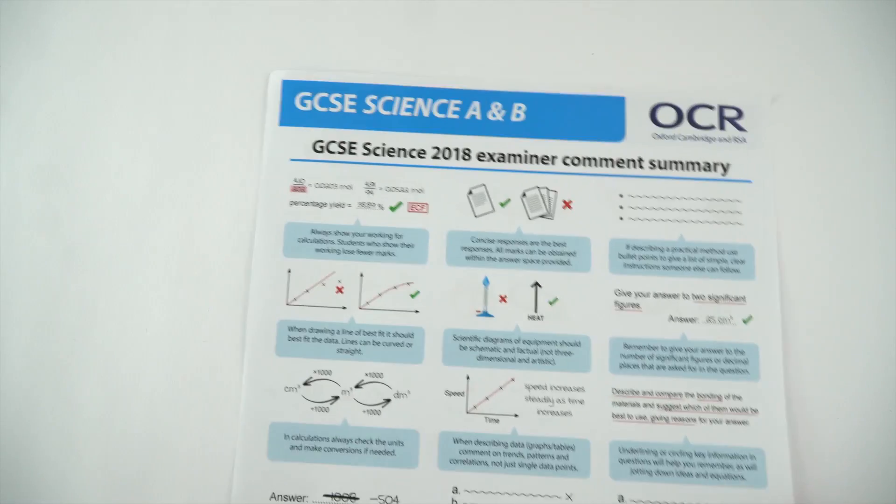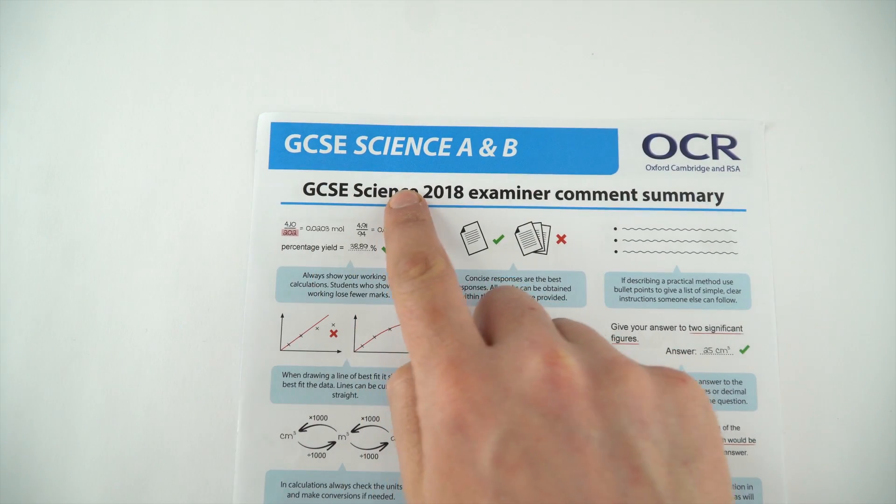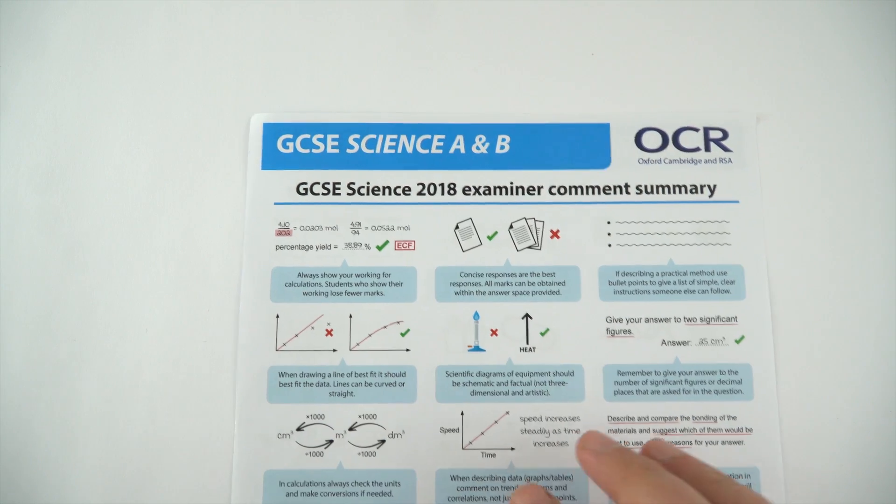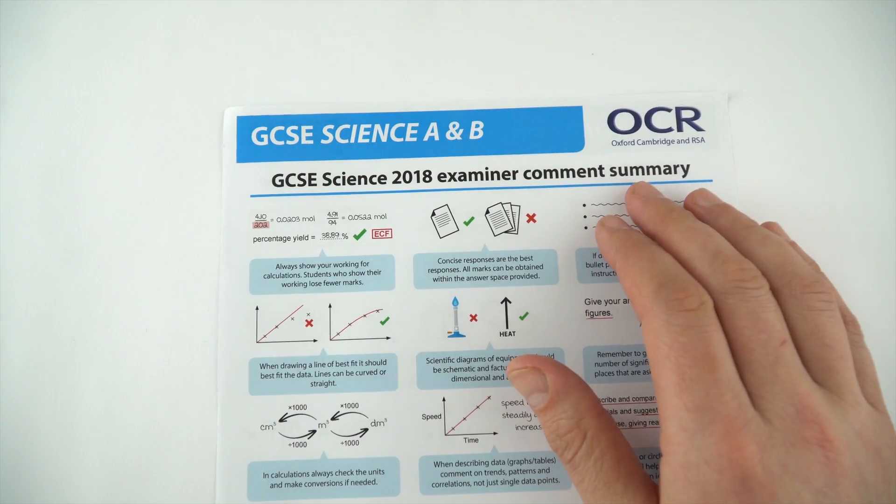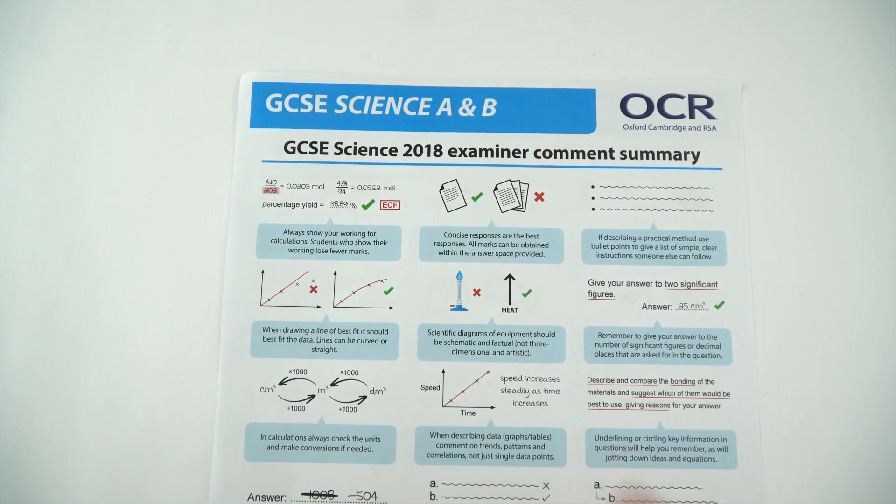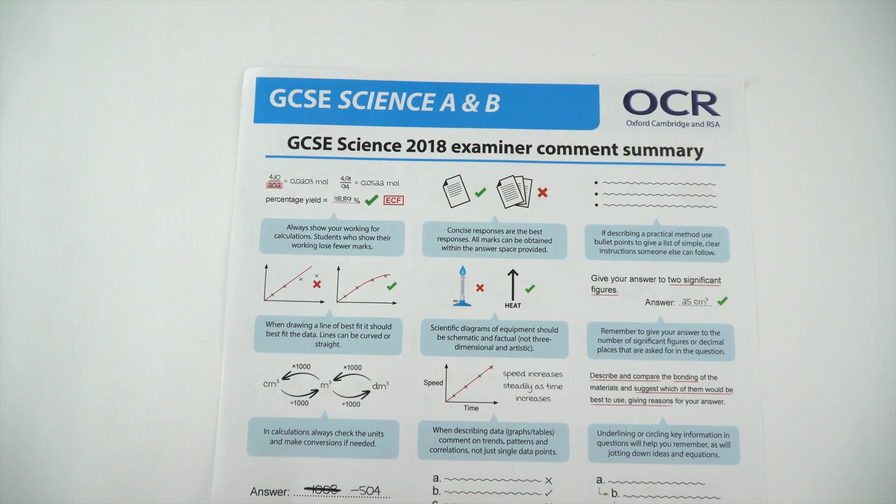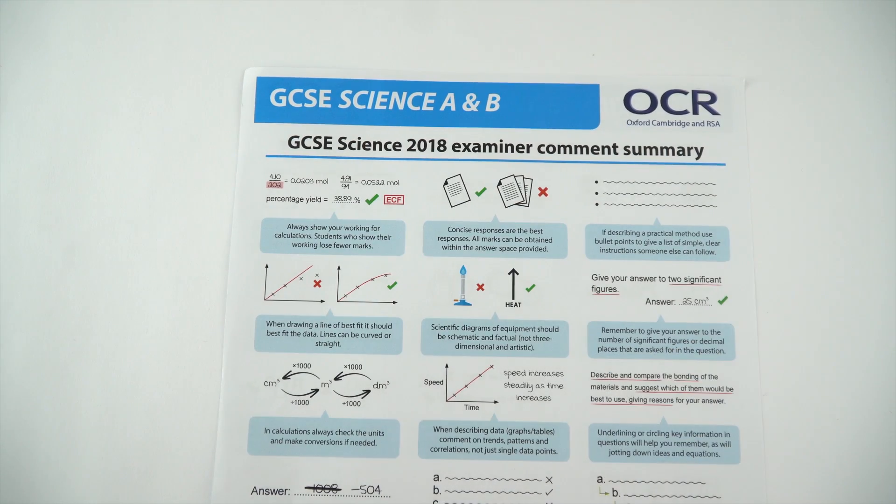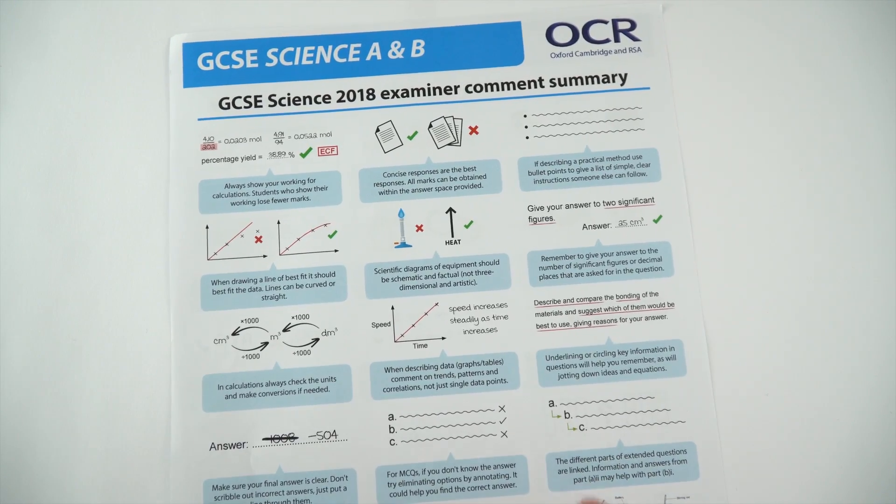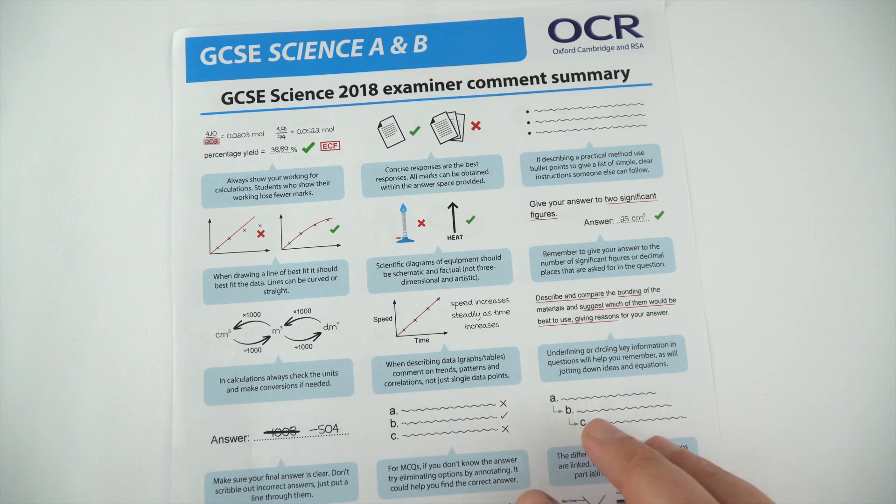This one here is for GCSE Science, both A and B for OCR, but I can guarantee that a lot of the mistakes that they see for OCR are going to be the same for Edexcel, AQA, for WJEC. Whichever exam board you're doing, these are the common mistakes. So although you might not be doing OCR exams this year, it's still worth watching this video as I go through some of the biggest mistakes that people make, and therefore they lose easy marks.